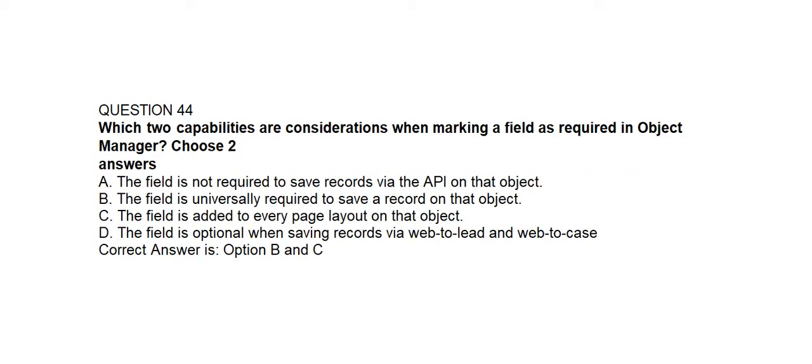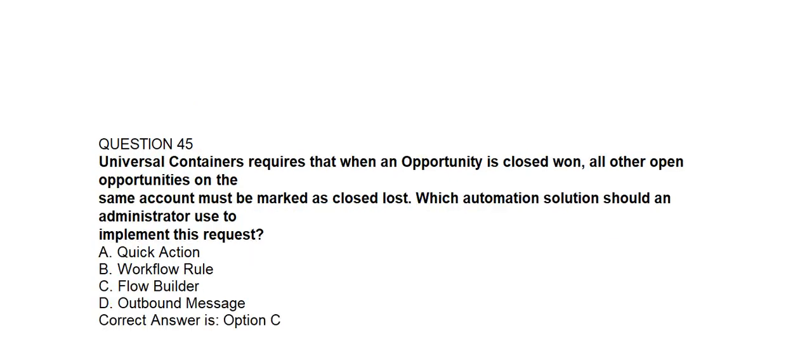Question number forty-four. Which two capabilities are considerations when marking a field as required in Object Manager? Option A: The field is not required to save records via the API on the object. Option B: The field is universally required to save a record on that object. Option D: The field is optional when saving records via Web to Lead and Web to Case. Correct answer is Option B and Option C: The field is universally required to save a record on the object, and the field is added to every page layout on that object.